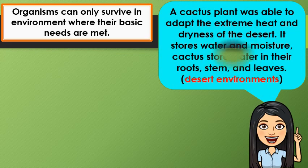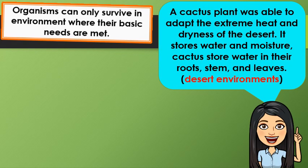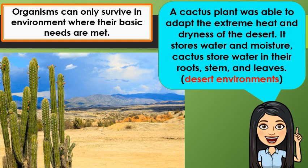Next, we have a cactus plant. A cactus plant is able to adapt to the extreme heat and dryness of the desert. It stores water and moisture. Cactus store water in their roots, stem, and leaves. That is why it is suitable to live in a desert environment.